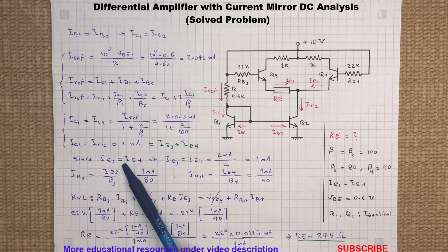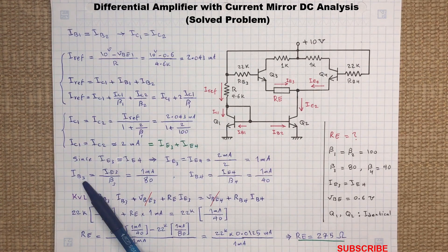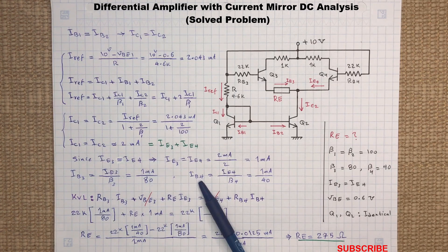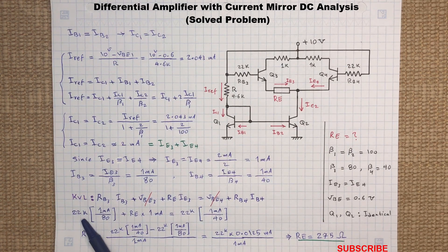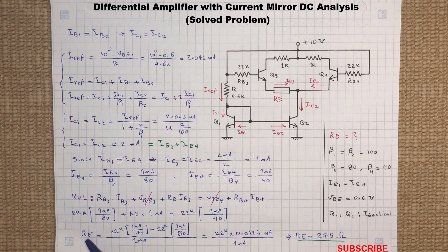Since we would like to have equal values for IE3 and IE4, they can simply be obtained by dividing IC2 by 2, so that each emitter can have a 1 milliamp current. We can also calculate the current flowing through the base of Q3 and Q4 by dividing their emitter currents by their beta. By putting everything together in the voltage equation and solving for the emitter resistor RE, we obtain 275 ohms for RE.